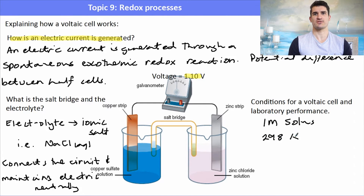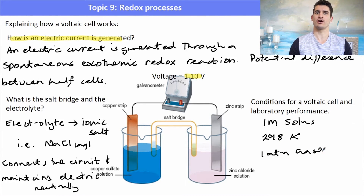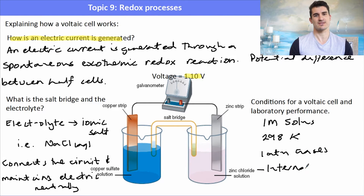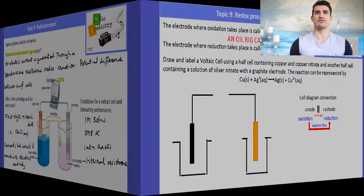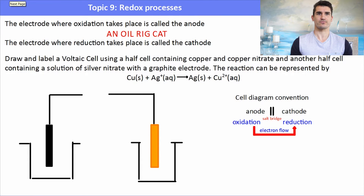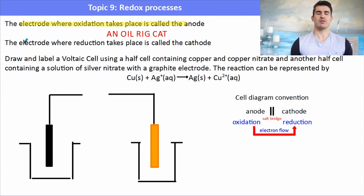Standard conditions for a voltaic cell are: one molar solutions, 298 K (25°C), and one atmosphere for gases. In the lab you might not observe exactly 1.1 volts because the circuit may have some internal resistance that lowers the measured voltage. Remember: the electrode where oxidation takes place is the anode, and the electrode where reduction takes place is the cathode — OIL RIG CAT.